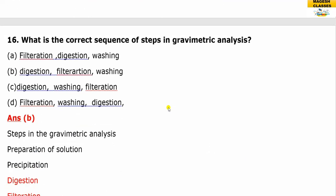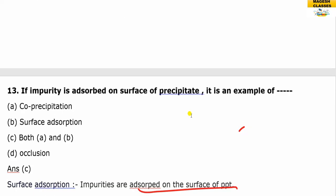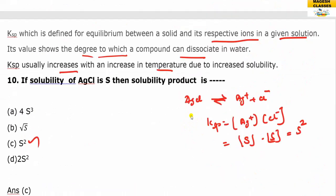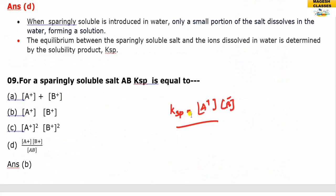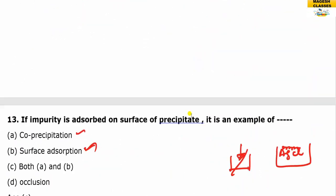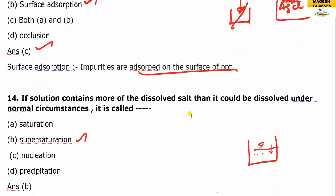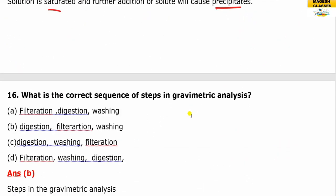What is the correct sequence of steps in gravimetric analysis? The correct sequence is: preparation of solution, precipitation, digestion, filtration, washing. The answer is B.